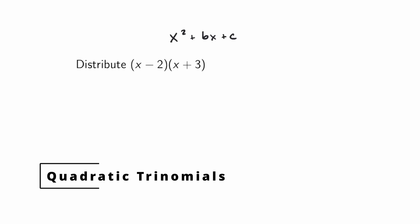So using FOIL—first, outer, inner, last—multiply x times x to get x², then x times 3 to get +3x. Then the inner, we get -2 times x to get -2x. And then finally the last, -2 times +3, so we get -6.